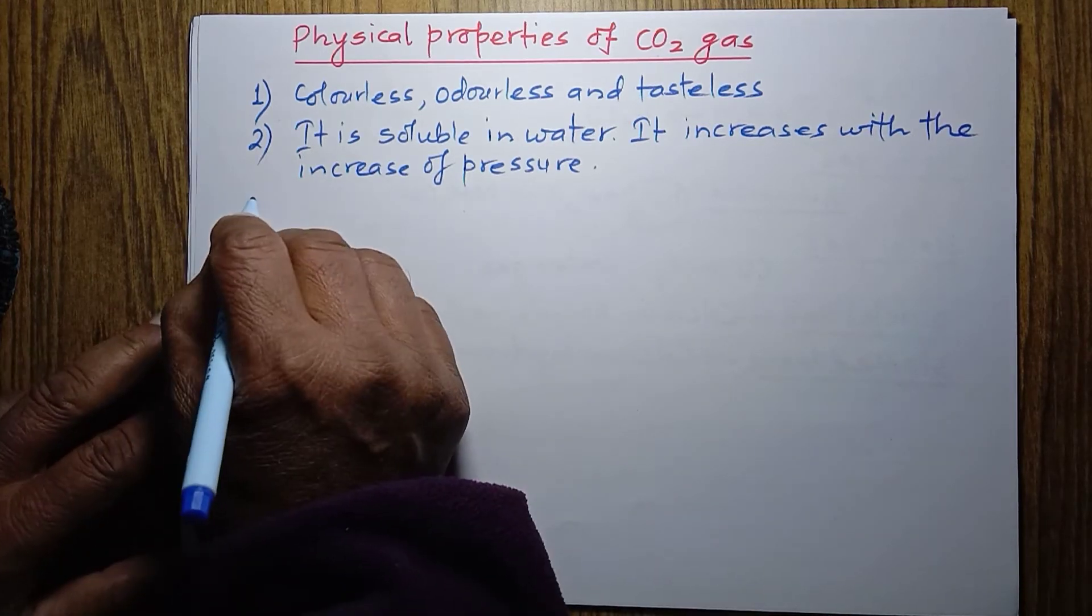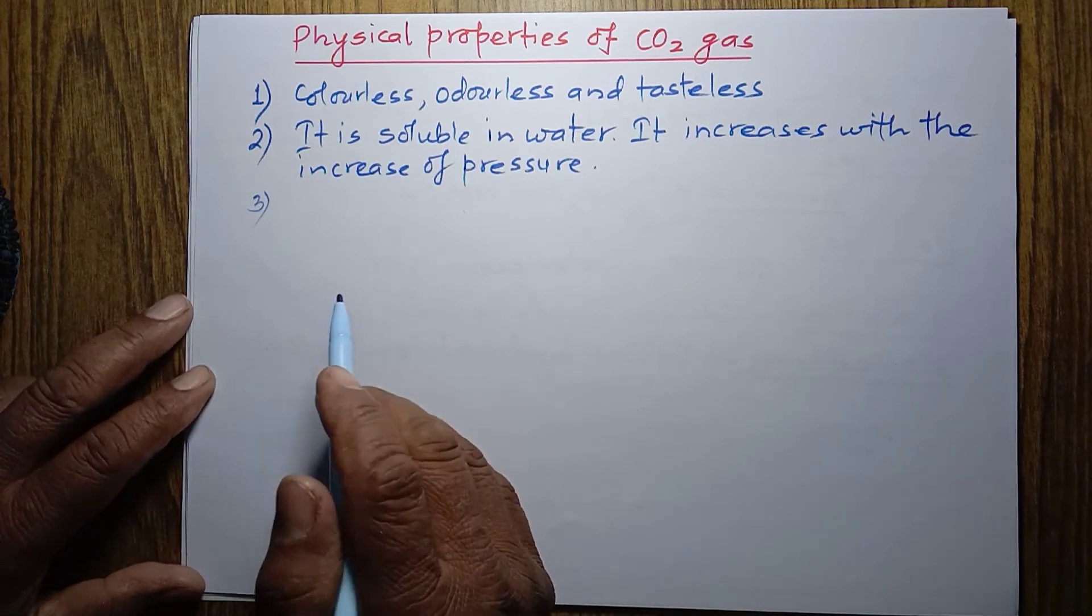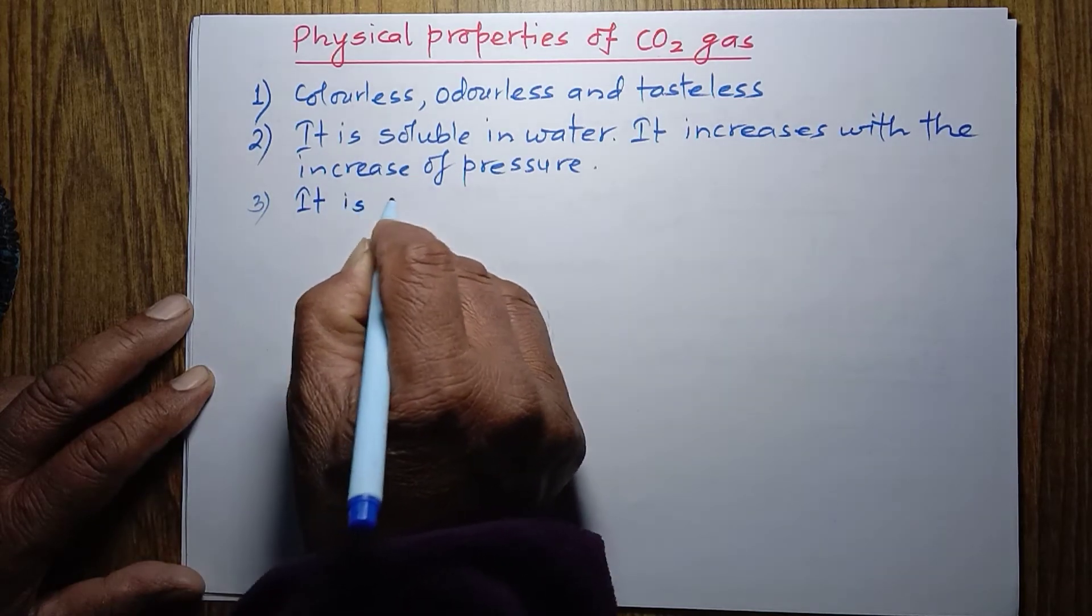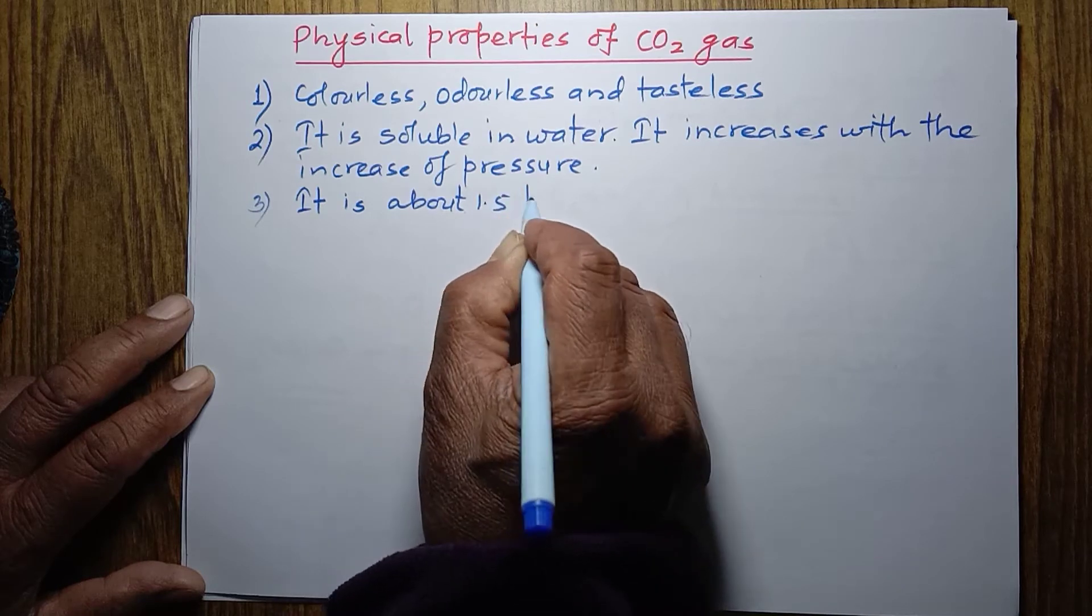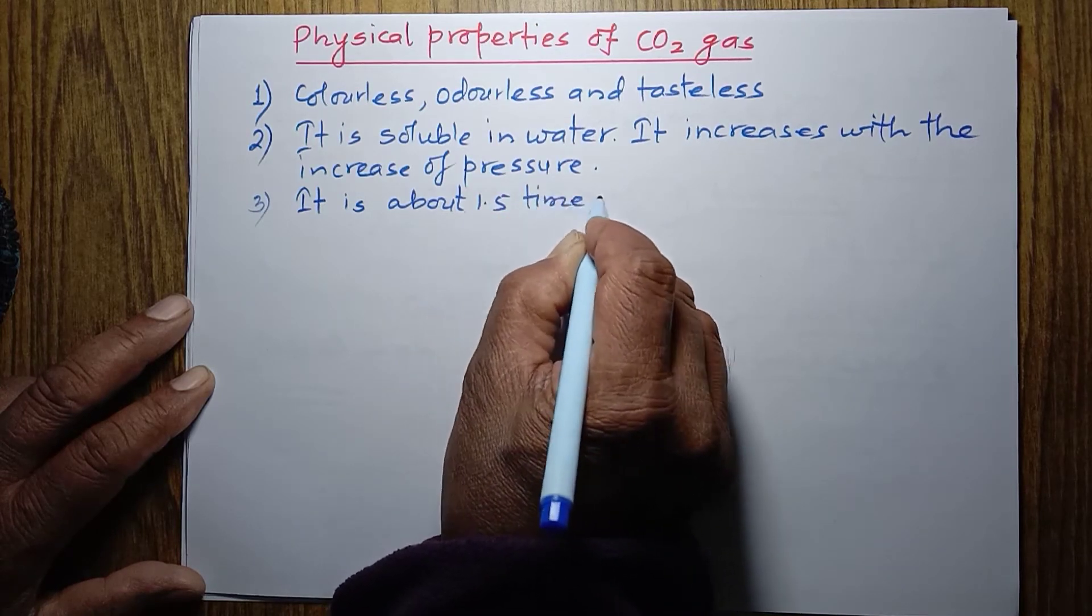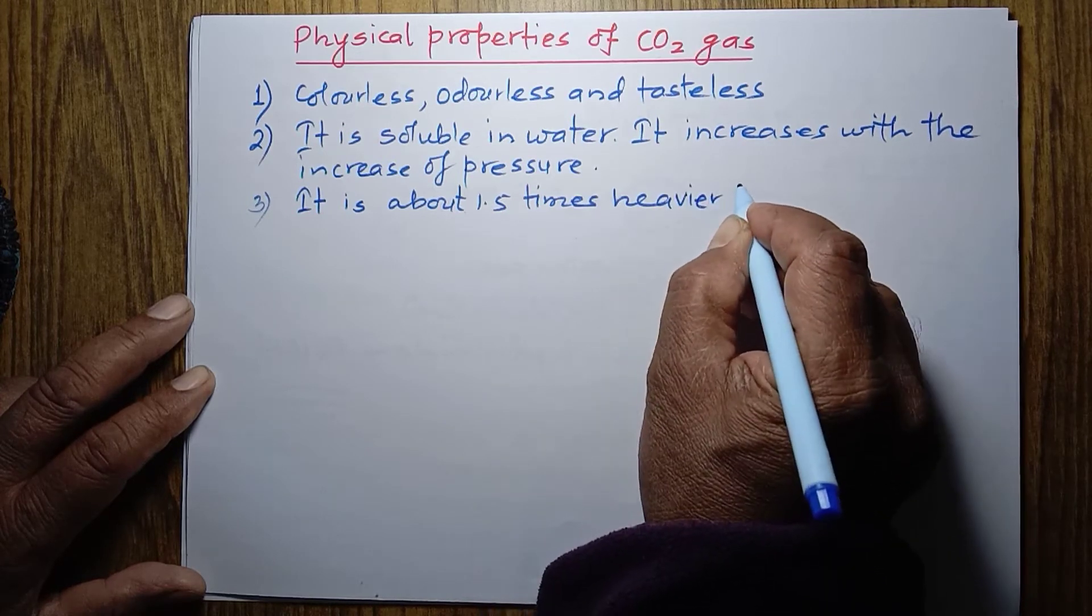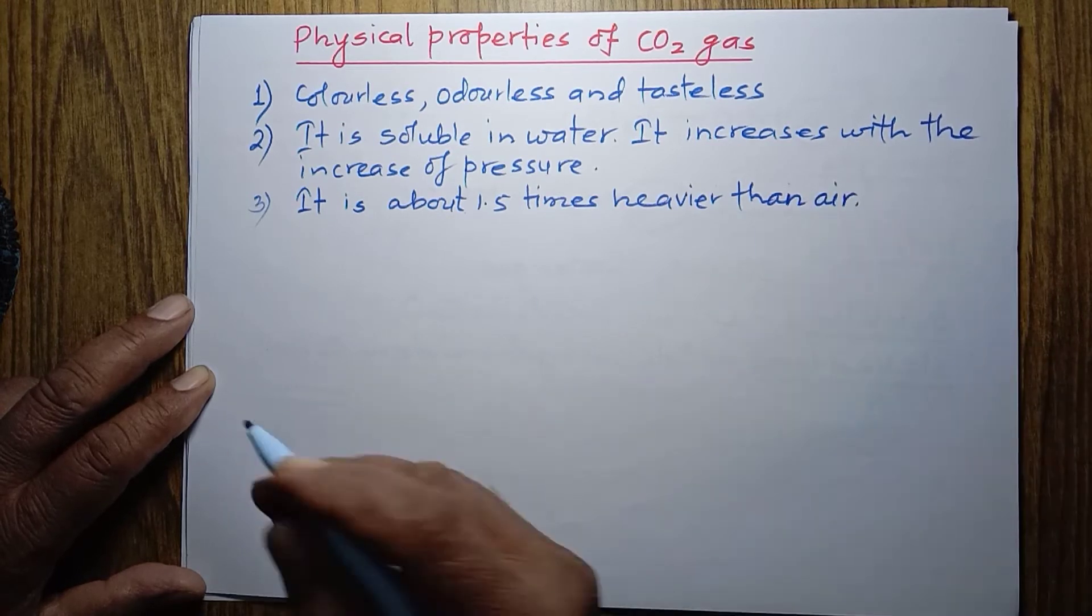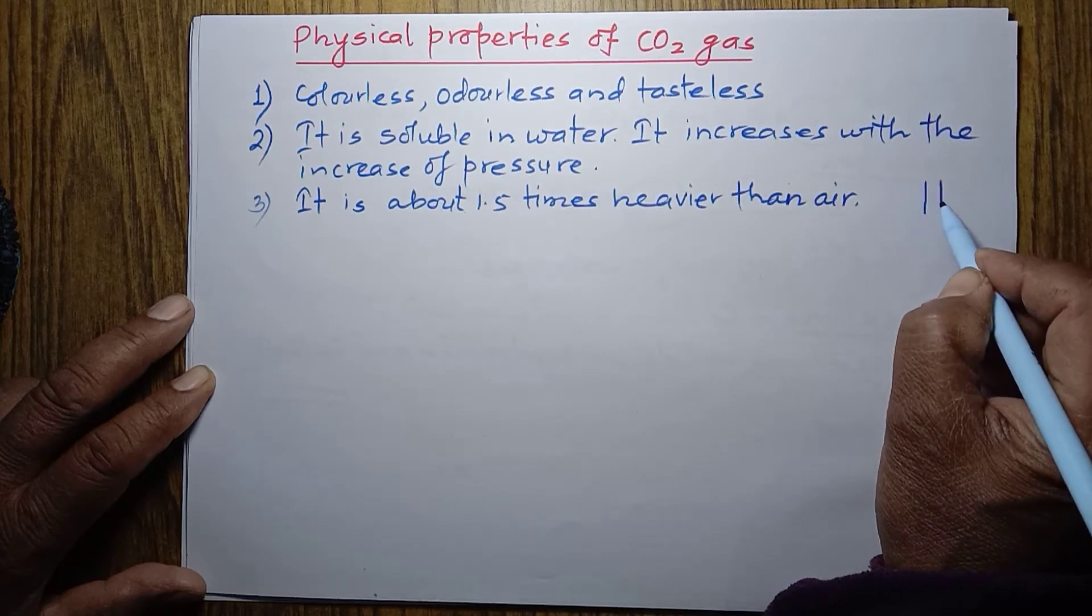Now, let's talk about the third one. We are talking about its density. It is about 1.5 times heavier than air. It is heavier than air. That's why we can collect this carbon dioxide gas in erect gas jar.